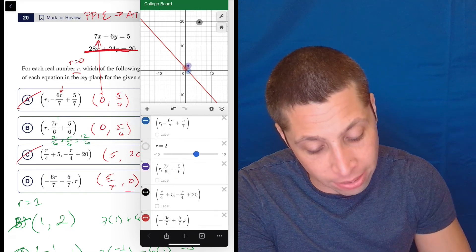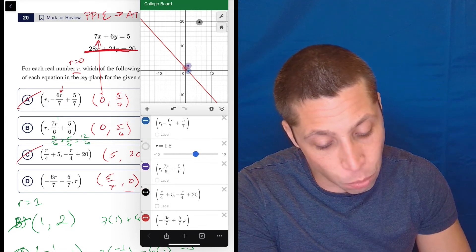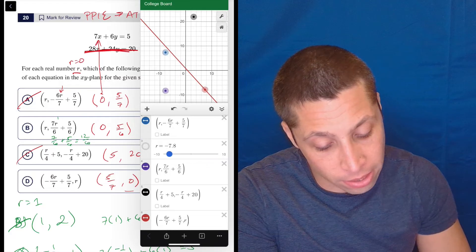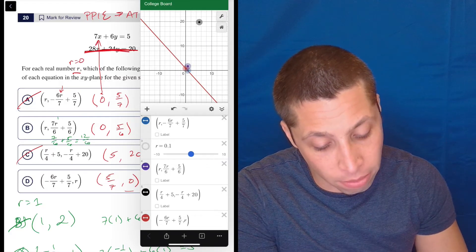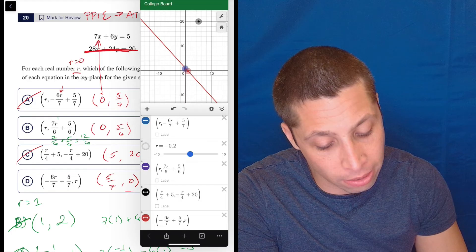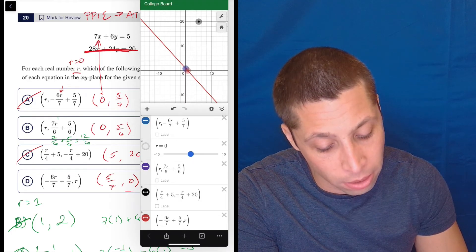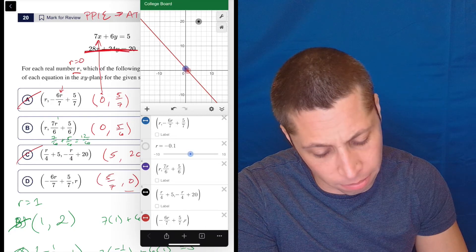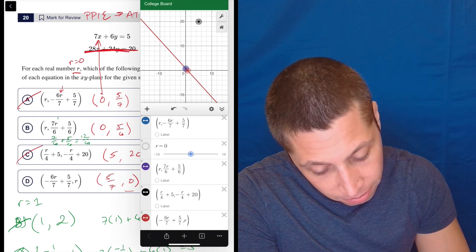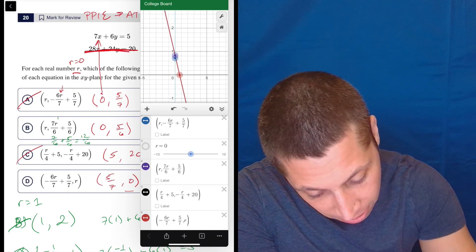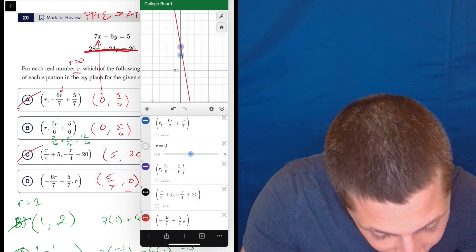But basically what's happening is we want this point to be on the line for all real values of R. So just play with that slider, and they dance. And you can kind of see that one of them, the red one, is always on the line. All the others move off of it.